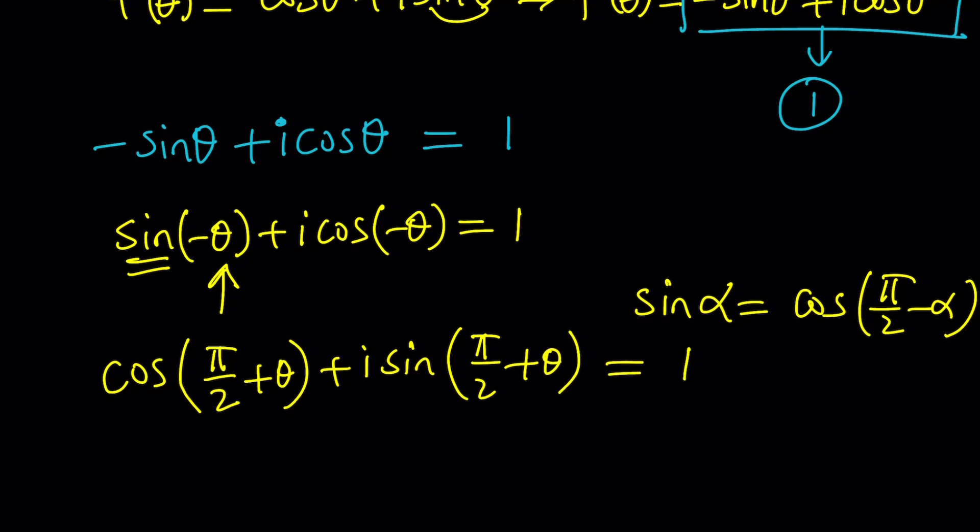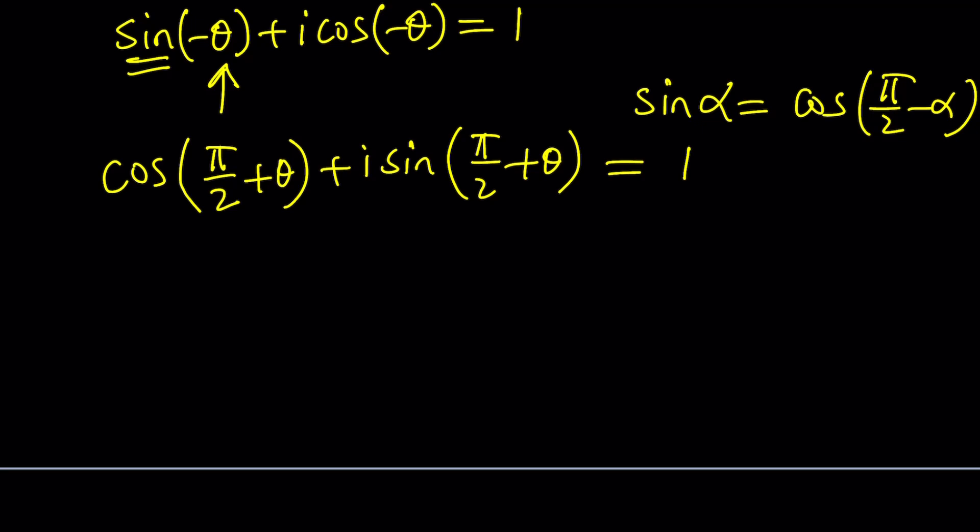Now you can apply the identity of Euler's. Cosine α plus i sine α is e to the iα. So this is equivalent to e to the i times α, which is π/2 plus θ. And for 1, I can write it as e to the power i times 2πn, because that's what 1 is in the complex world. n is an integer. This is a multiple of 2π. Now i cancels out, leaving us with π/2 plus θ is equal to 2πn.